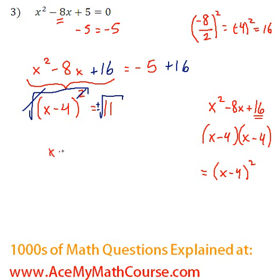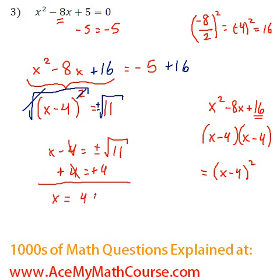So x minus 4 is equal to plus or minus root 11. Then I can add 4 to both sides of the equation. So x is going to be equal to 4 plus or minus root 11.